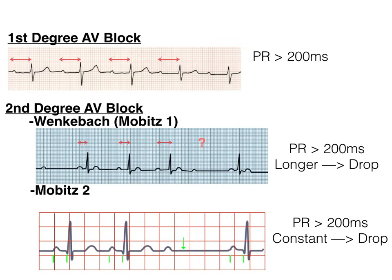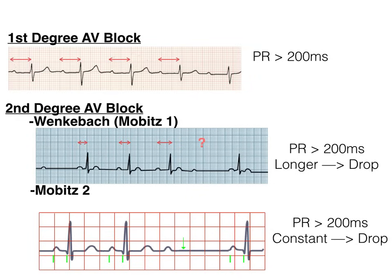You need to know the differences, but these are just two subtypes of a second-degree AV block. The last one we need to talk about is a third-degree AV block, and I've dedicated an entire slide to it because it's really important that you be able to pick this out — this is probably the highest yield, in my opinion. A third-degree AV block is one where the atria and the ventricles contract independently of one another. They both work, they both squeeze, but there's such an abnormality in the conduction system that they basically do their own thing.